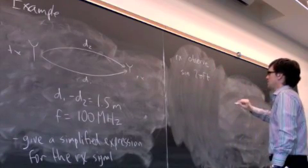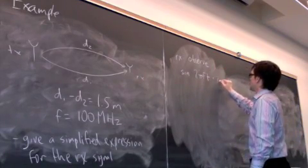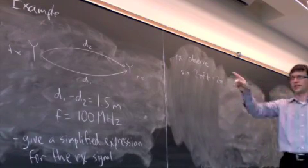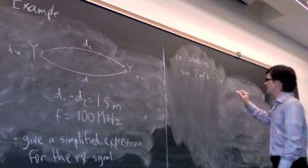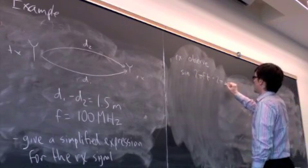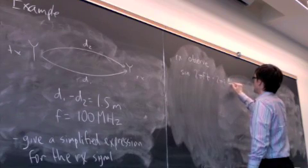So this is the first path, sine 2πft plus the phase difference inherent in the path, which is 2πf d1 over c.